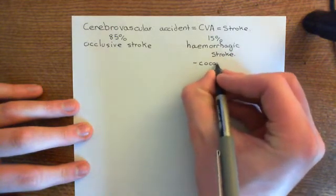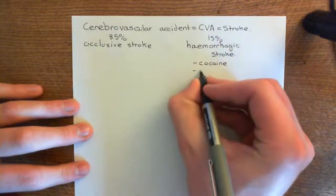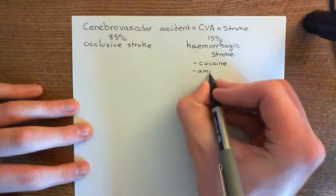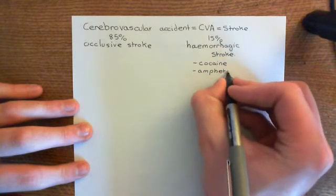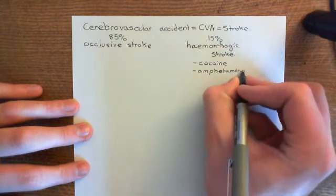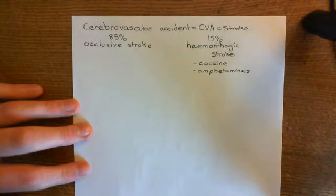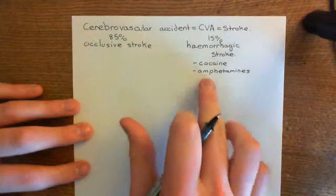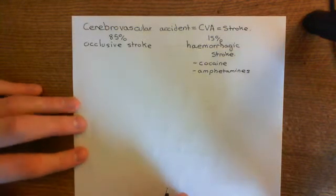These drugs both produce a very high rise in blood pressure because they cause the release of noradrenaline from all the neurons which innervate the smooth muscle cells, causing contraction of the smooth muscle cells. So they cause a hefty rise in blood pressure, and that can lead to hemorrhagic stroke.